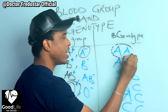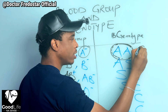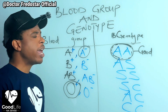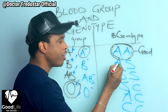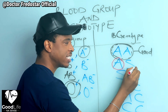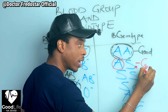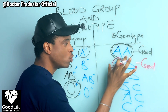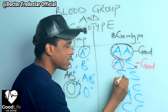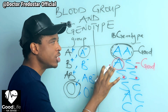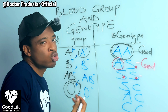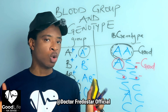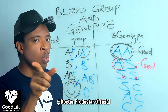Now, AA — this is good genotype. AS means you have this A which is good, but this S is abnormal. However, because the A inside is good, AS is still good. AA is good, AS is good, but SS — that is an abnormal genotype. SS is not good. But that does not mean if you are SS, your life is finished — no. That is why we say AS and AS should not marry.